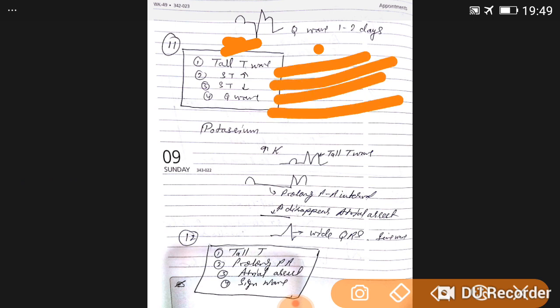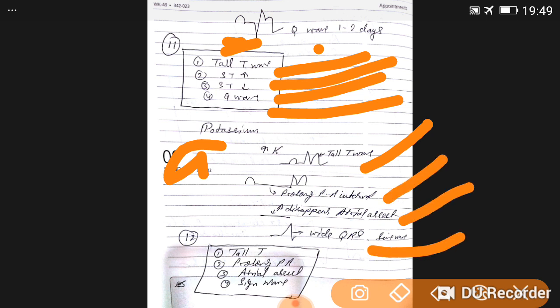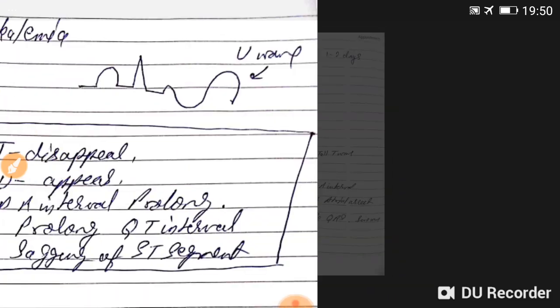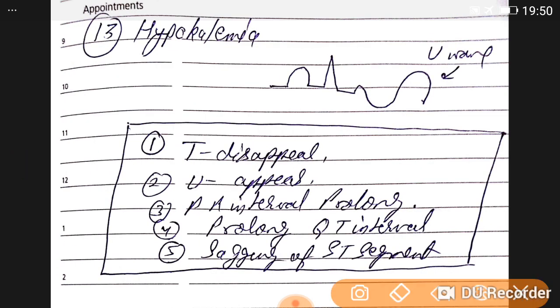Potassium plays main role. In hyperkalemia, we see tall T, prolonged PR interval, disappearance of P wave or atrial arrest, and sine waves. In hypokalemia we see T depression, U wave appears, PR prolonged, prolonged QT, and sagging of ST waves.